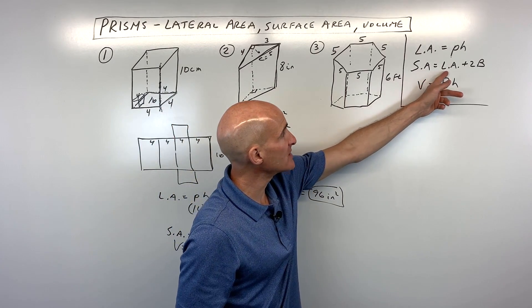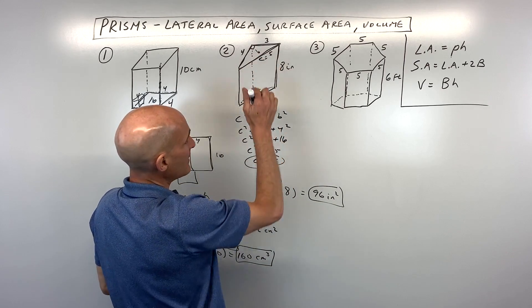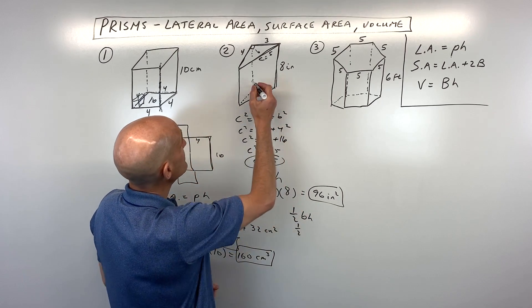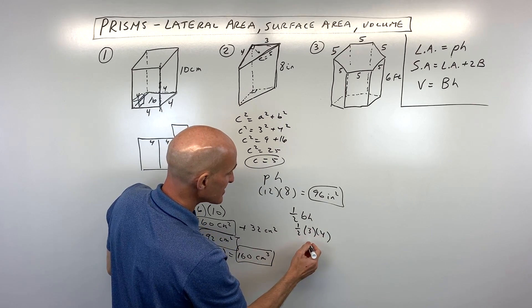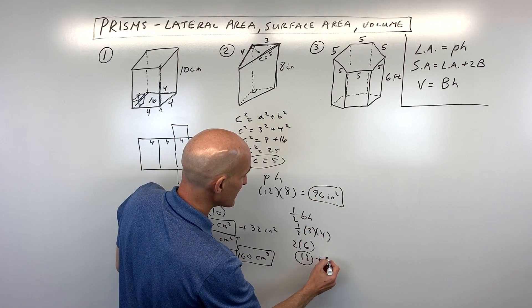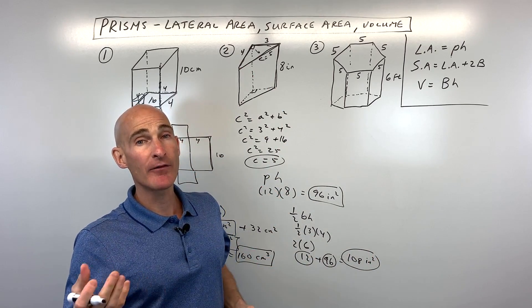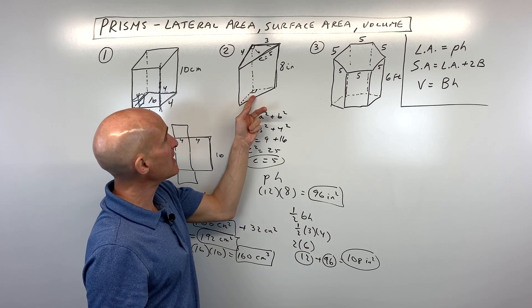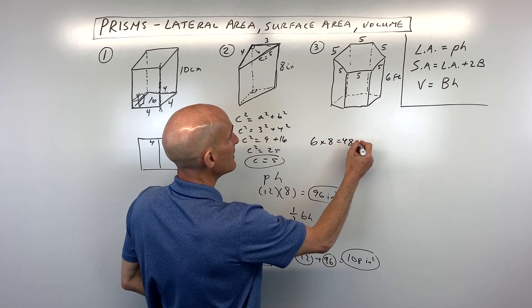For surface area, take the lateral area of 96 plus the area of the base times 2. Using the triangle area formula — one-half base times height — that's one-half times 3 times 4, which is 6. Times 2 for top and bottom gives 12. Adding 12 to 96 gives 108 inches squared for the surface area. For volume, it's the area of the base times the height: 6 times 8 equals 48 inches cubed.